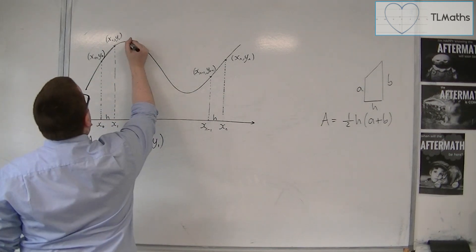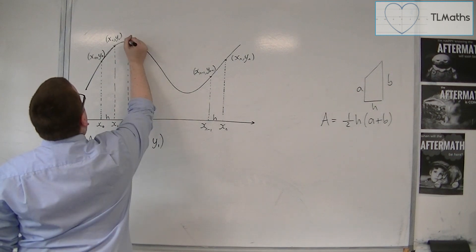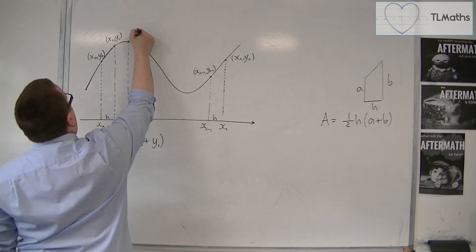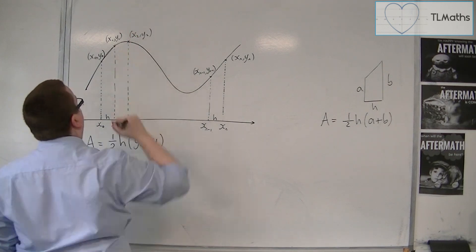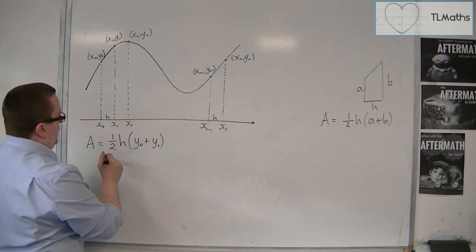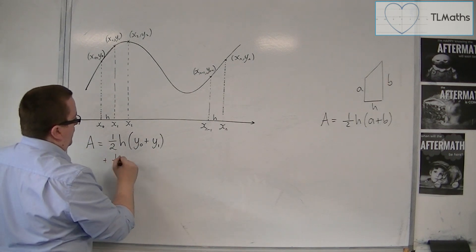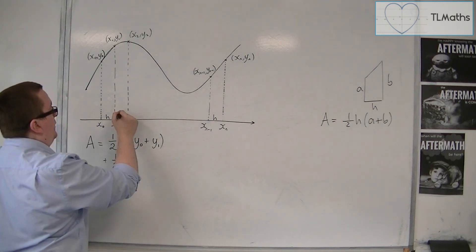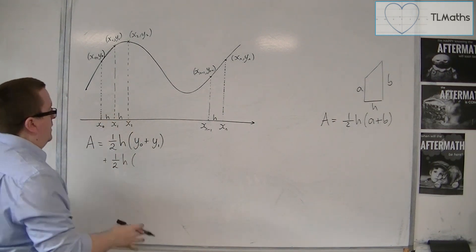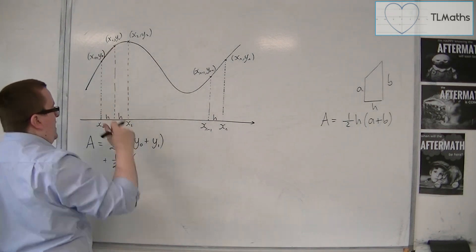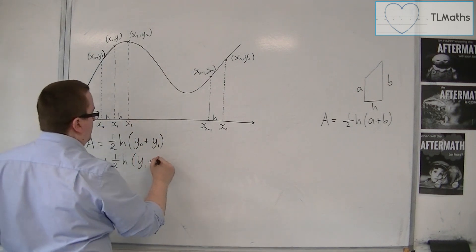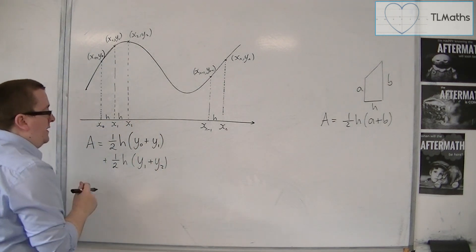Now, if I look at the next trapezium along, then this would be x2, and this point would be x2, y2. And that trapezium would have an area of 1 half times h, because that's the same width again, times by, now y1, because that's the left-hand height, plus y2. The second height.